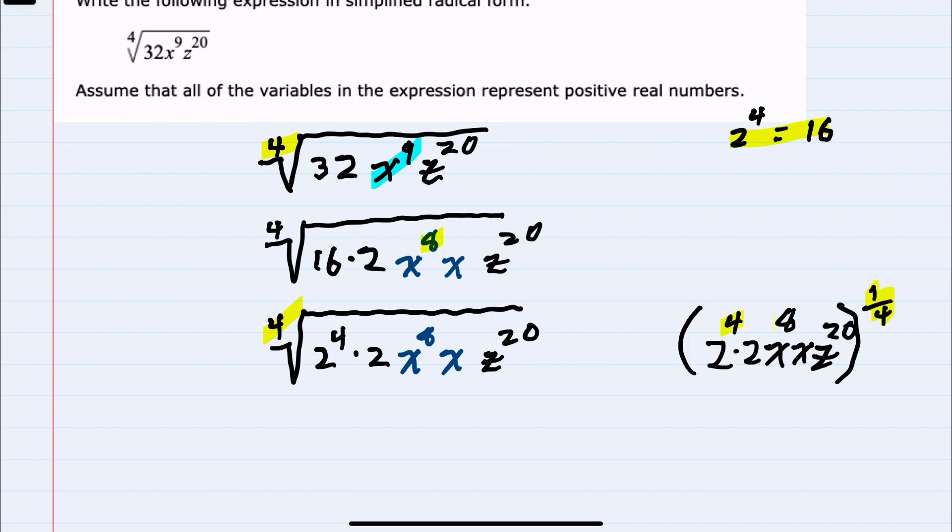The exponents that are multiples of 4 just get divided by 4. So our first 2, if I divide that fourth power by 4, it will come outside the radical as a 2.